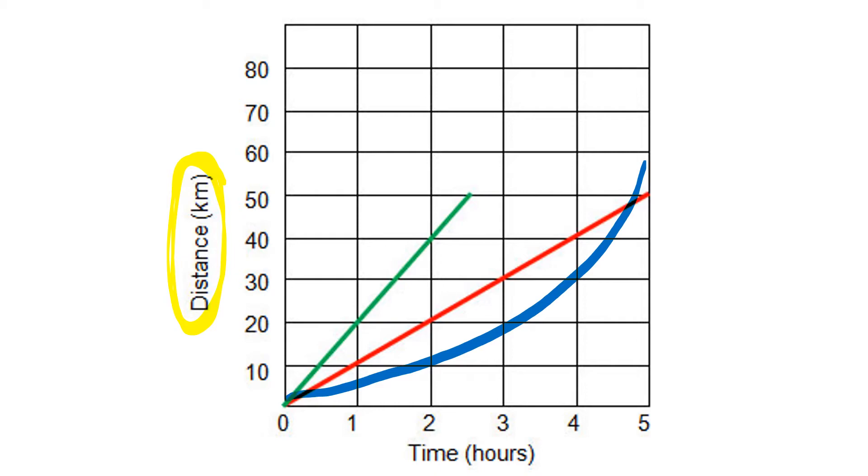So here you can see that there is a definite curve in my line - it is not straight. So what's happening here is I started out slow and I got faster and faster and faster. So that's my acceleration line - it's getting faster, faster.